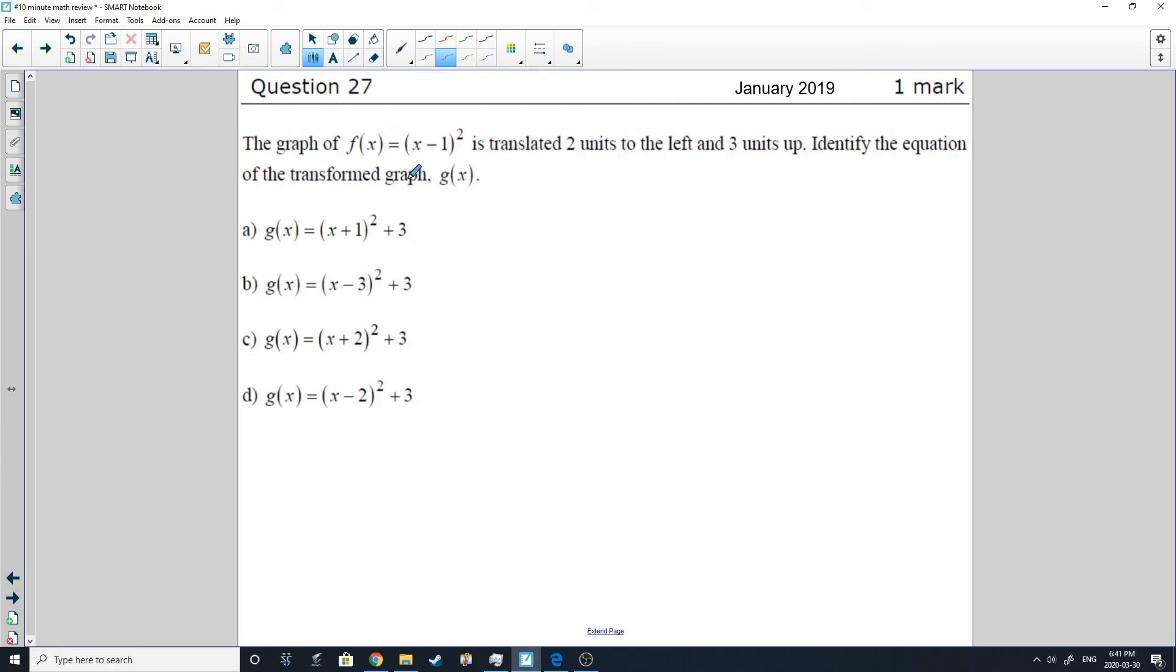Question 27, another multiple choice from January 2019. So they're giving us the original graph of F of X. And it's X minus 1 squared. It's translated 2 units to the left and 3 units up. And identify the equation of the transform graph G of X. Well, they all have a plus 3. So that takes care of doing that. It's all the answers have it. But if we're translating 2 units to the left, we need to remember that to the left would be negative. We're always going to be doing the opposite thing in the equation when it comes to the X value. So I'm actually going to be adding 2 to that number. So it's going to be negative 1 plus 2, which is plus 1, giving us the answer A. So there we go, another tricky one.